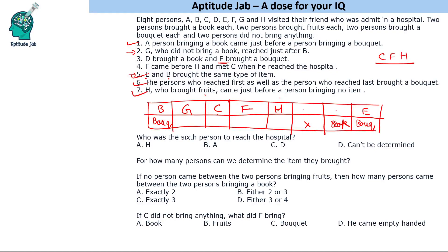We are left with two people: A and D. D brought a book, so D fills the book slot and A is the person who did not bring anything. G did not bring a book, so G can bring either fruits or nothing. H brought fruits. C could bring fruits, book, or nothing; F could bring fruits or nothing. So we cannot fully determine what G, C, and F brought — there are multiple possibilities.